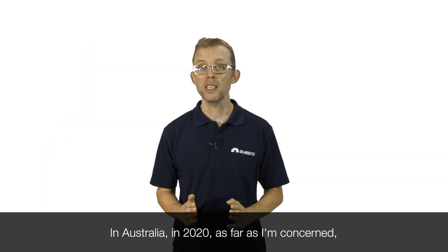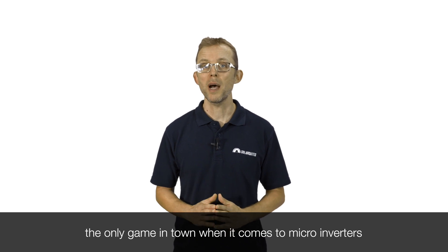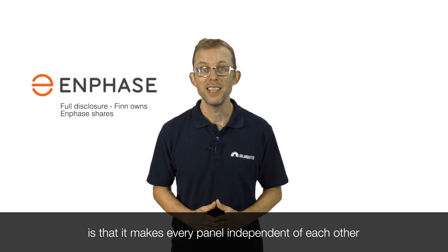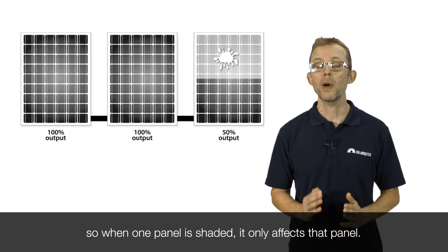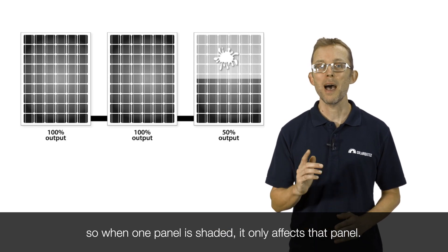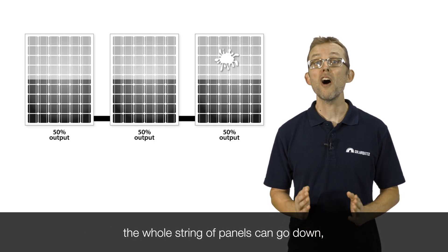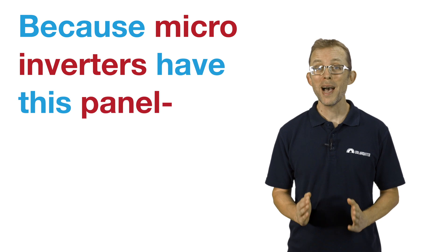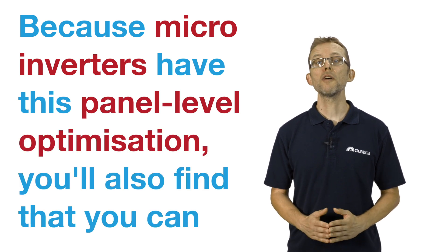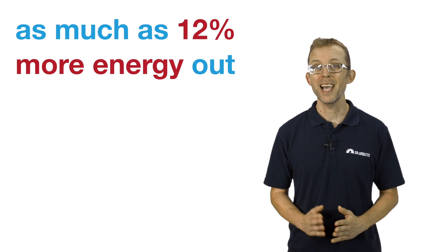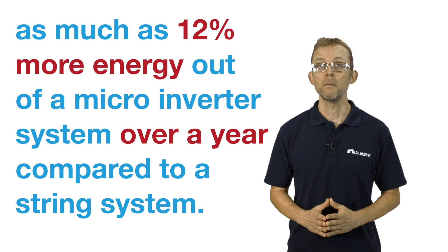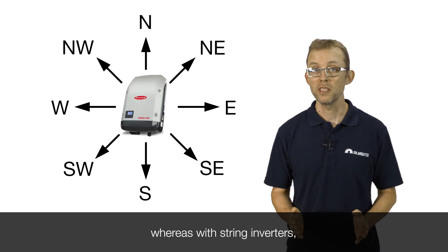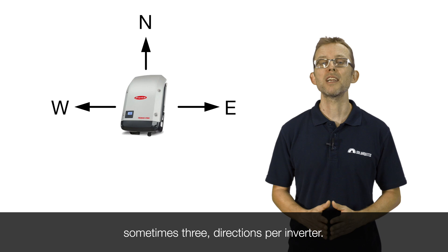In Australia in 2020, as far as I'm concerned, the only game in town when it comes to micro-inverters is Enphase. One core advantage of micro-inverters over string inverters is that it makes every panel independent of each other. So when one panel is shaded, it only affects that panel. In a string system, when one panel is shaded, the whole string of panels can go down — kind of like when you stand on a hose. Because micro-inverters have this panel level optimization, you'll also find that you can get as much as 12% more energy out of a micro-inverter system over a year compared to a string system. It also means that you can have panels facing every possible direction, whereas with string inverters you can only choose two, sometimes three, directions per inverter.